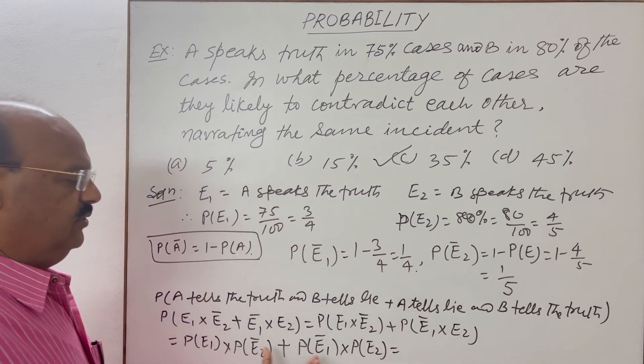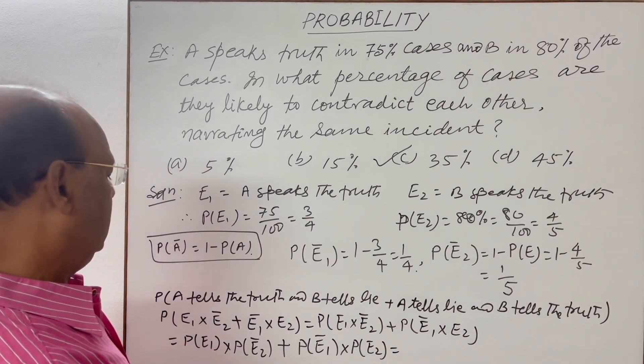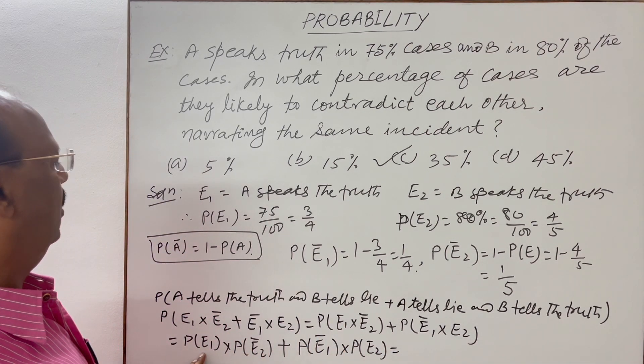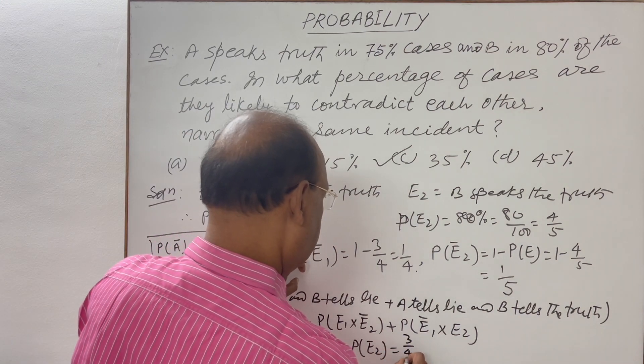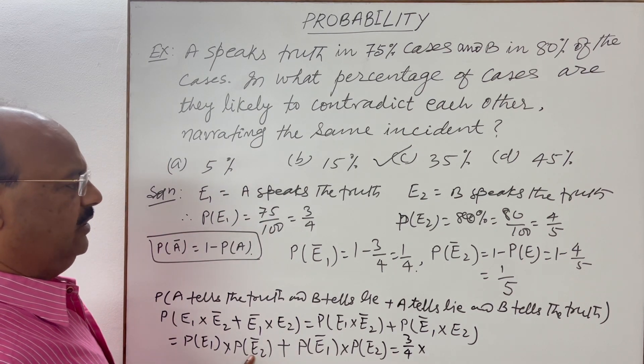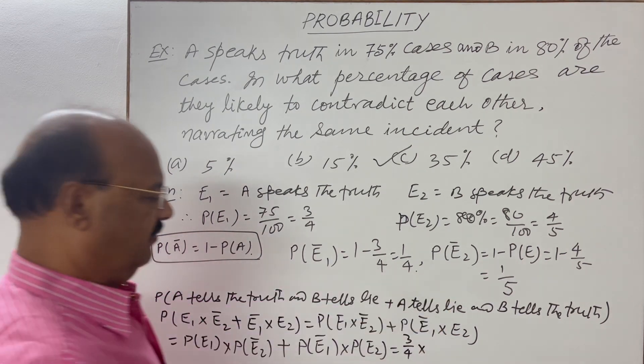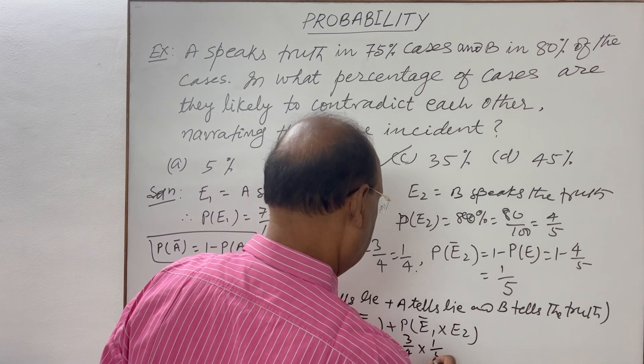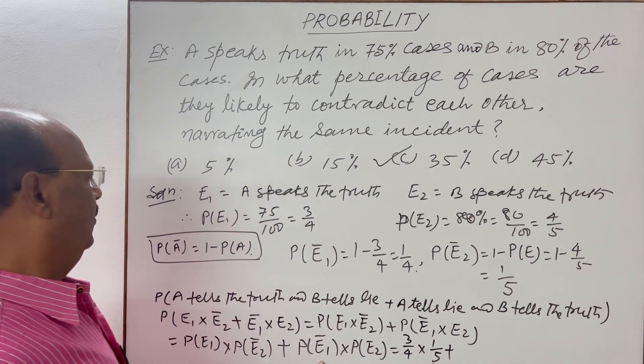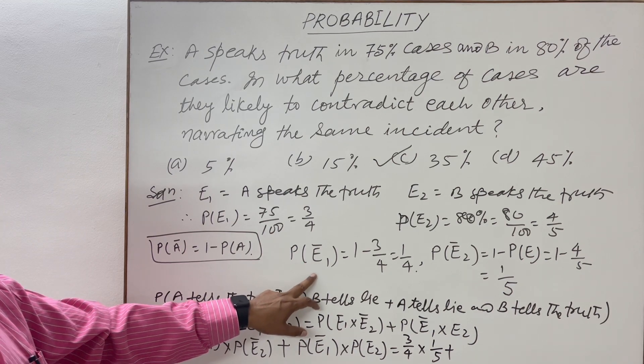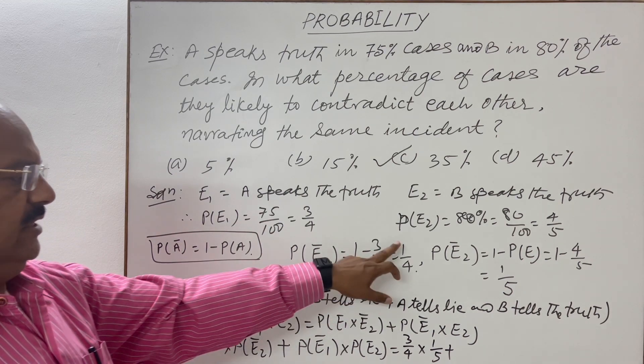Now we will put these values and simplify to get the answer. So probability of E₁ is 3 by 4, this is 3 by 4 into probability of not E₂ is 1 by 5, this is 1 by 5, plus probability of not E₁, this is 1 by 4.